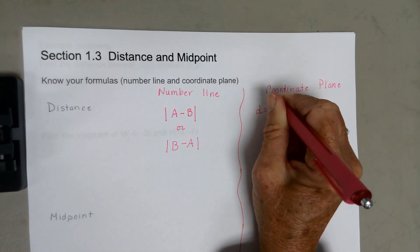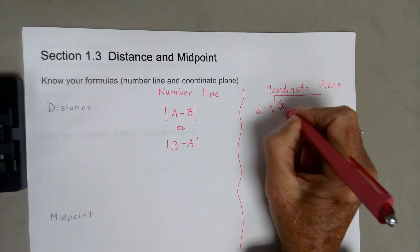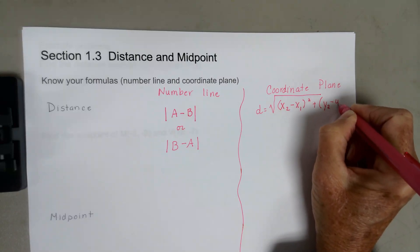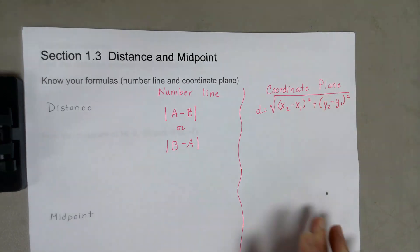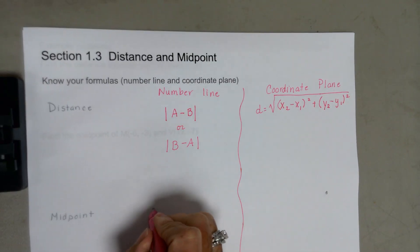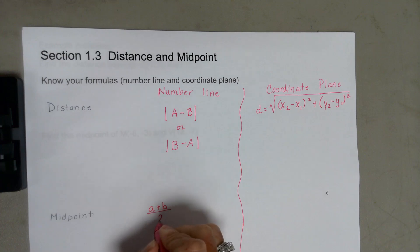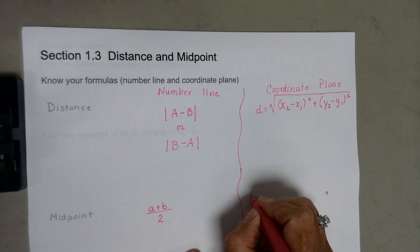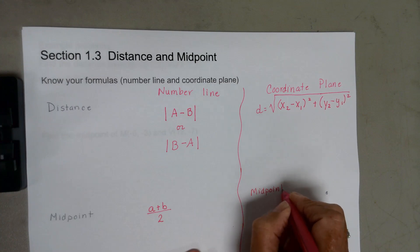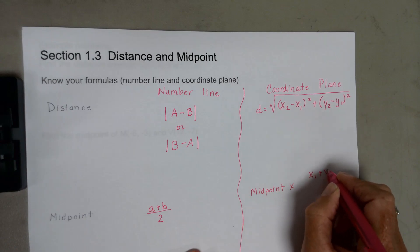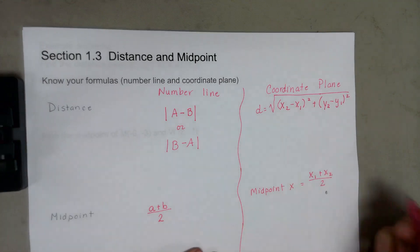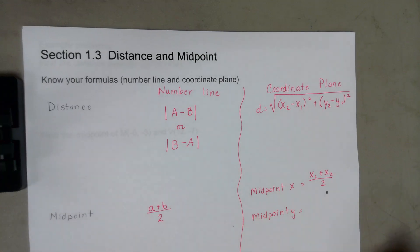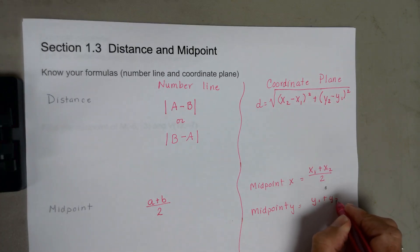On a coordinate plane, use the distance formula: the square root of (x₂ − x₁)² plus (y₂ − y₁)². The midpoint formula on the number line: add the two numbers together and divide by 2 — you're basically finding the average. On the coordinate plane, midpoint x equals (x₁ + x₂) ÷ 2, and midpoint y equals (y₁ + y₂) ÷ 2.